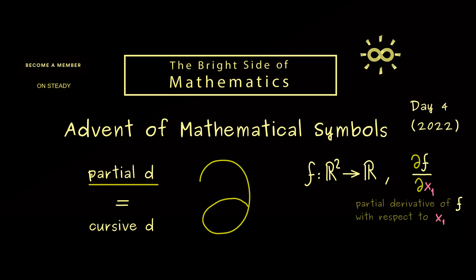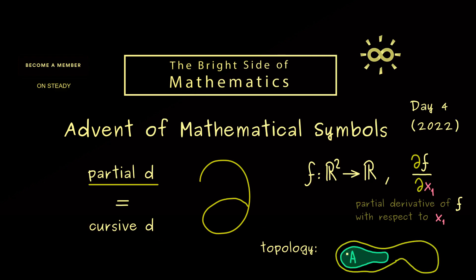Our partial d is also used in other contexts. For example, in topology we talk about open and closed sets. It turns out that for each subset in a given space, we can define the so-called boundary of the set. In this picture here, we would visualize it as the shell of the given set A. And then we denote this boundary by partial d A. This is a completely different usage of this curve d than we have it for the partial derivatives.